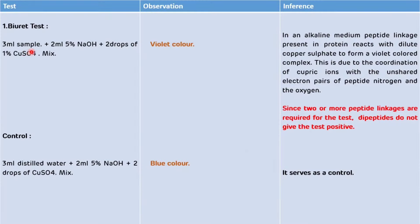Now we will see the procedure of the Biuret test. In a test tube, take 3 ml of sample and add 2 ml of 5% sodium hydroxide, then add 2 to 3 drops of 1% copper sulfate and mix it properly. If there is a development of violet color, that means the Biuret test is positive, indicating the presence of protein in the solution. This is because in an alkaline medium, the peptide linkage present in protein reacts with dilute copper sulfate to form a violet color complex.